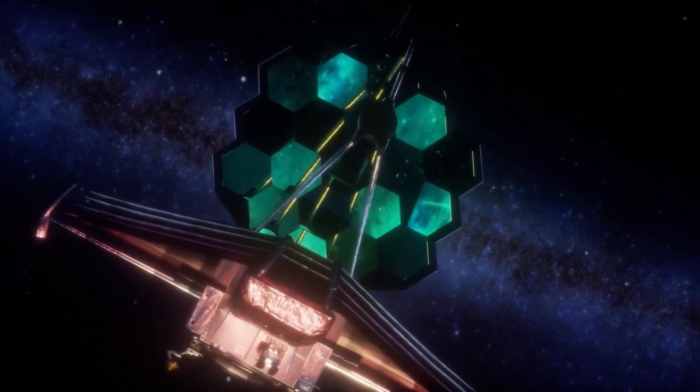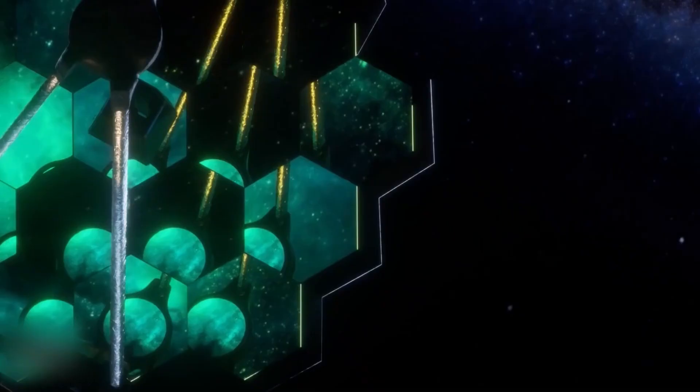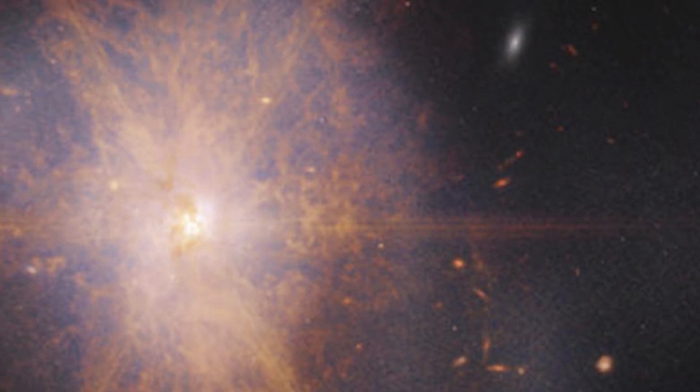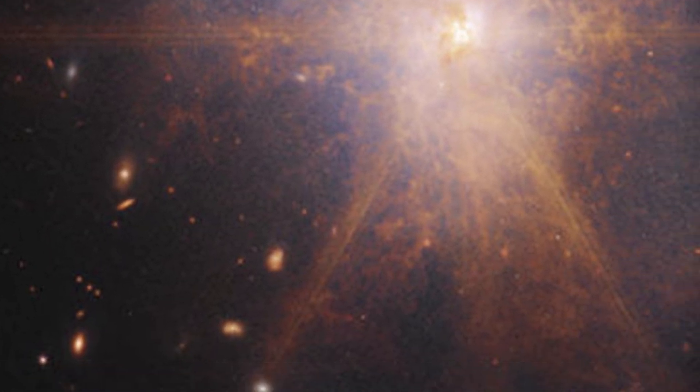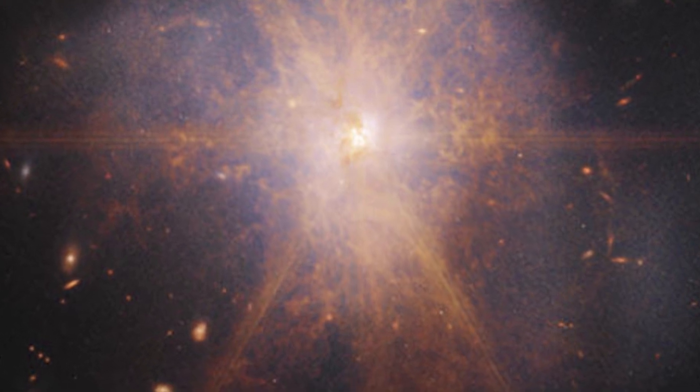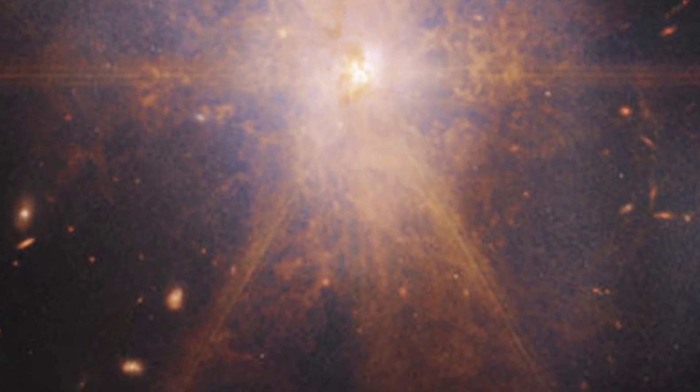This latest view from the James Webb Space Telescope shows an impressive galactic merger of the two galaxies. This image also shows faint tidal tails extending from the outskirts of the merger, indicating the gravitational pull between the two galaxies. Finally, the reddish and orange streams and filaments represent scattered organic materials in ARP-220.